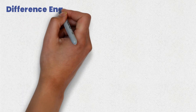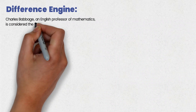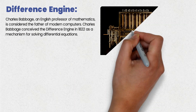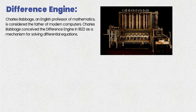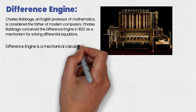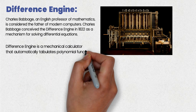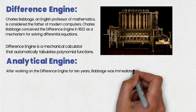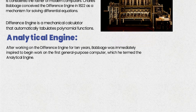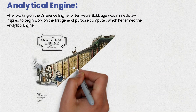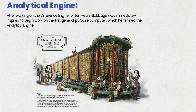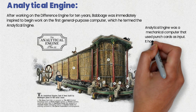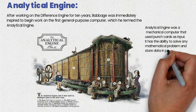Difference engine: Charles Babbage, an English professor of mathematics, is considered the father of modern computers. He conceived the difference engine in 1822 as a mechanism for solving differential equations — a mechanical calculator that automatically tabulates polynomial functions. Analytical engine: after working on the difference engine for 10 years, Babbage was inspired to begin work on the first general-purpose computer, which he termed the analytical engine. It was a mechanical computer that used punch cards as input, with the ability to solve any mathematical problem and store data in permanent memory.